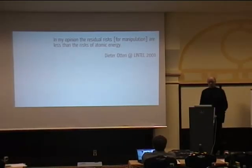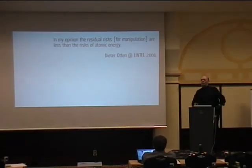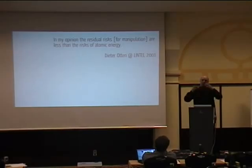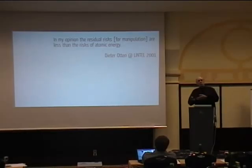Some people trust electronic voting. Dieter Otten, an internet voting expert from Osnabrück, says: 'In my opinion, the residual risk for manipulation is less than the risks of atomic energy.' He's talking about the crypto system in use. We can build pretty good crypto systems now — open, using standard cryptography, and pretty safe. We know how to use cryptography in voting systems so that it's tamper-safe as long as it's a closed system. But unfortunately, it's not.